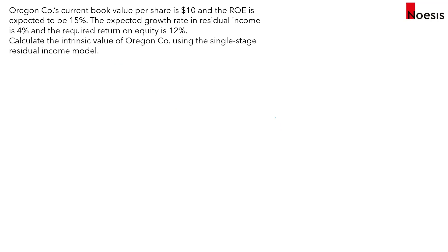Now let's look at an example. Oregon Call has a current book value per share B0 of $10. ROE is expected to be 15%, the expected growth rate in residual income is 4%, and the required return on equity is 12%. Calculate the intrinsic value using the single-stage residual income model.